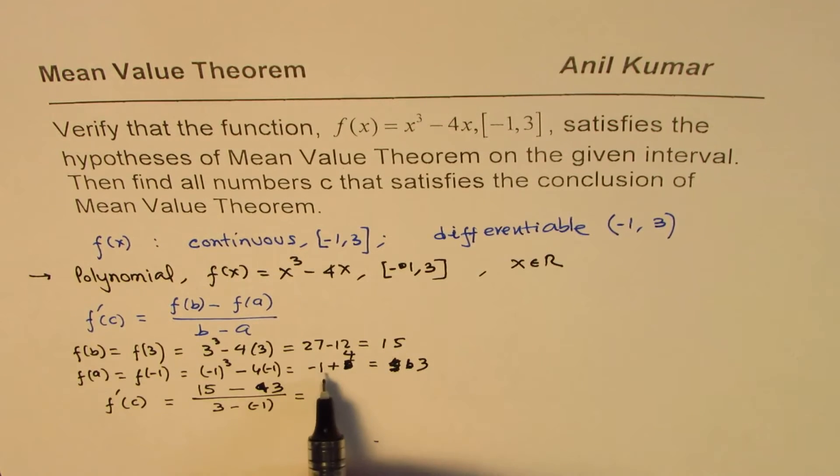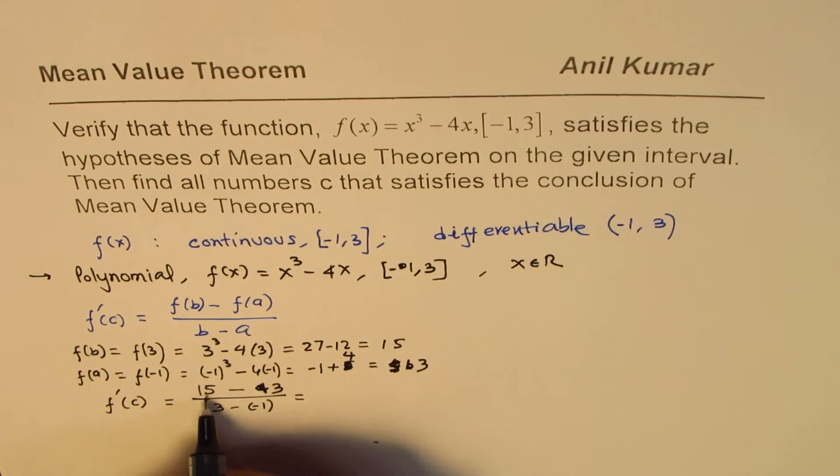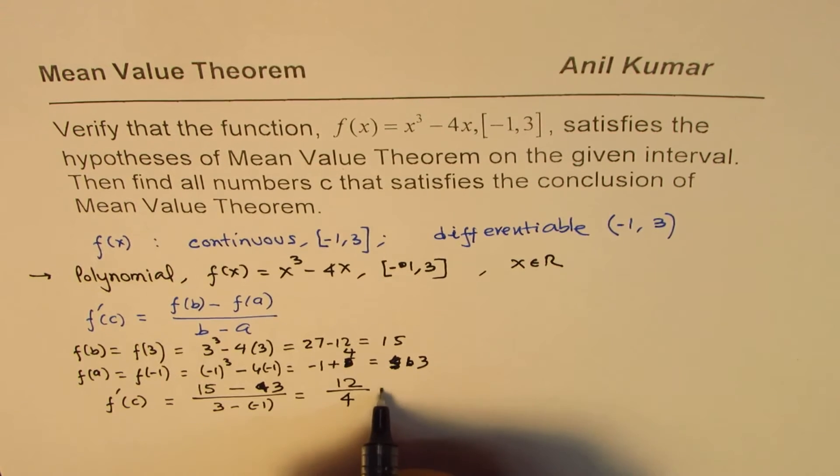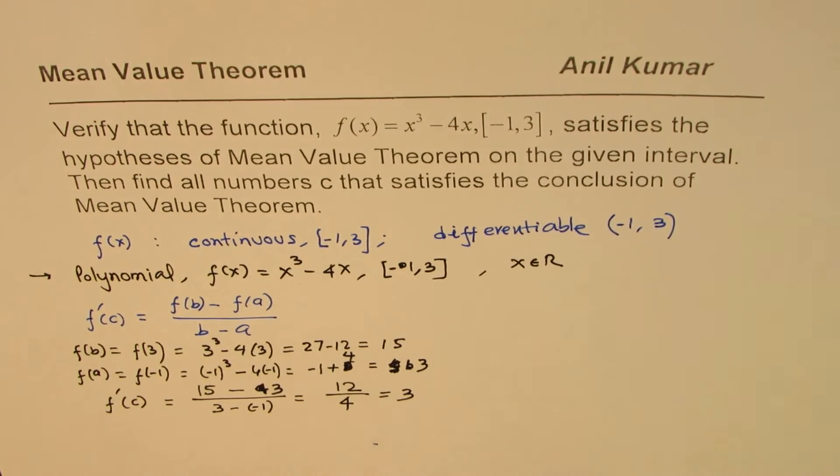Minus 1 plus 4 is 3. So, we have 15 minus 3 divided by 3 minus minus 1. 15 minus 3 is 12. So, we get 12 divided by 4, and that gives us 3. So, the value of f dash c should be 3.